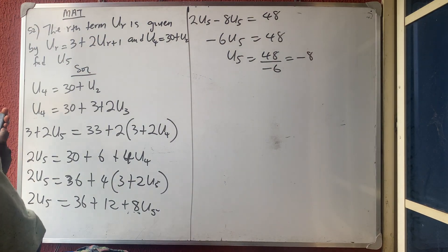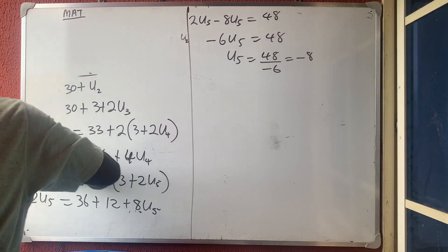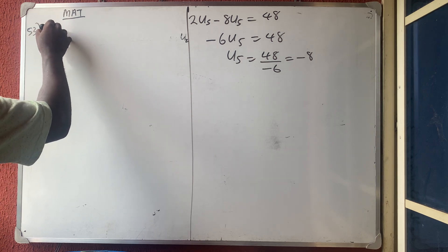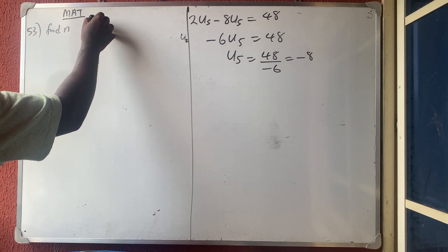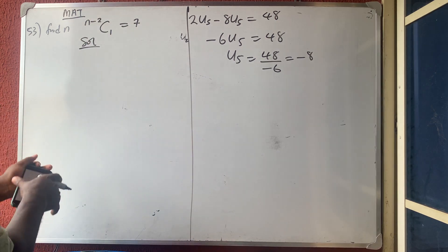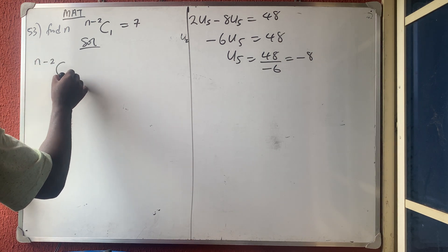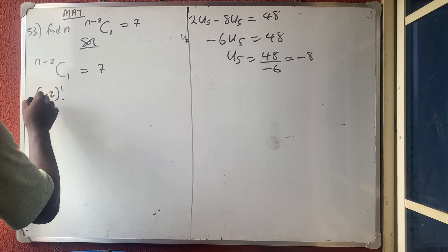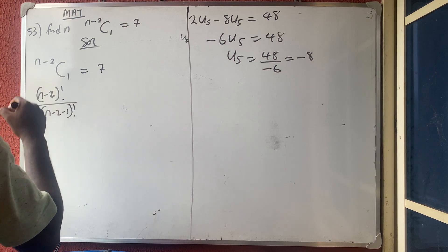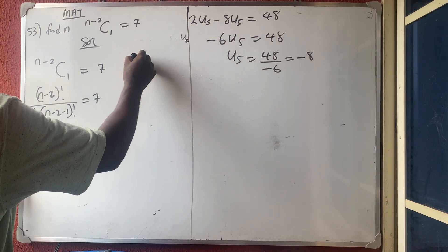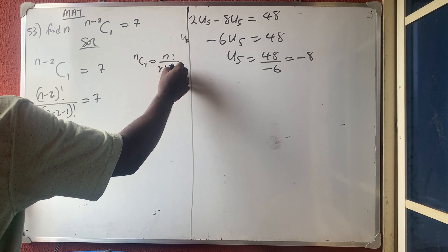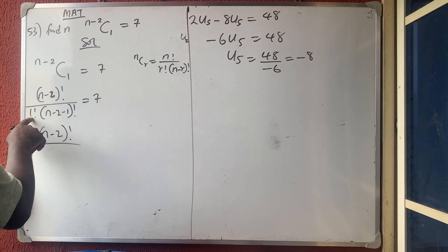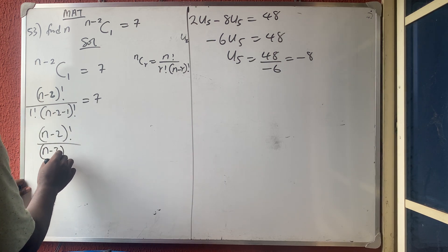The answer is simply minus 8. Now question 53: find n if C(n-2, 1) = 7. Using the combination formula, (n-2)! over 1! times (n-2-1)! equals 7. Since nCr = n! over r!(n-r)!, this simplifies to (n-2)! over 1 times (n-3)! = 7.